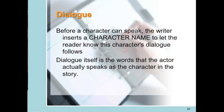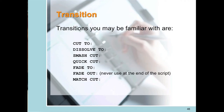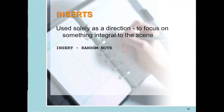Dialogue is the spoken words delivered by the actors. A transition is a technical direction to the editor about how you, the writer, see a scene move from one scene to the next. Inserts are like shots but spell out exactly what should be seen on screen — typically what is referred to as B-roll, meaning images that don't have the primary actors in them, or can be recorded using doubles or stand-ins.